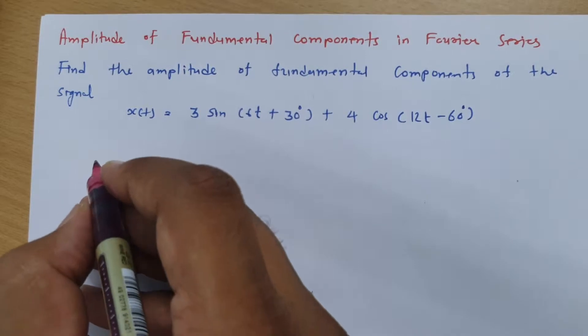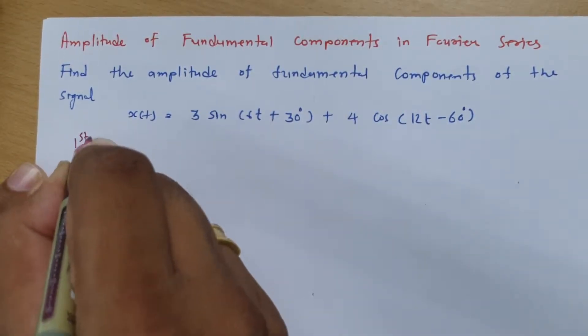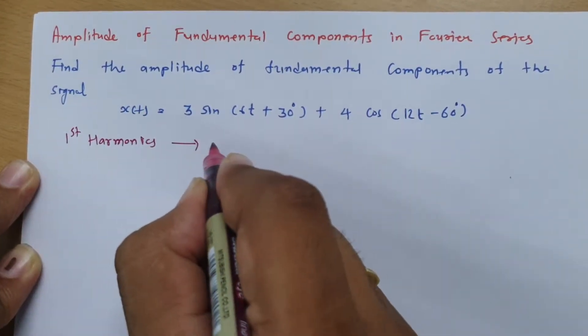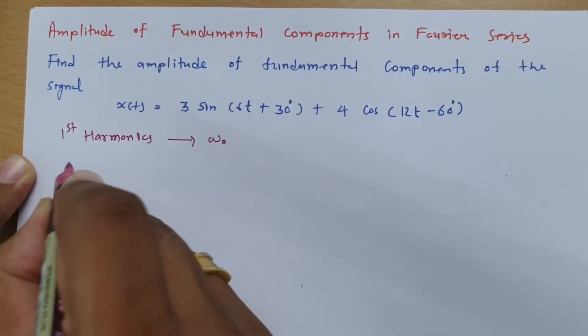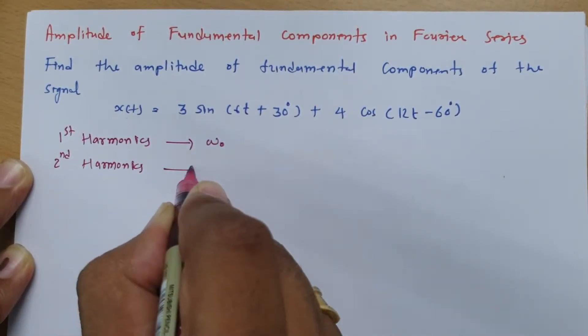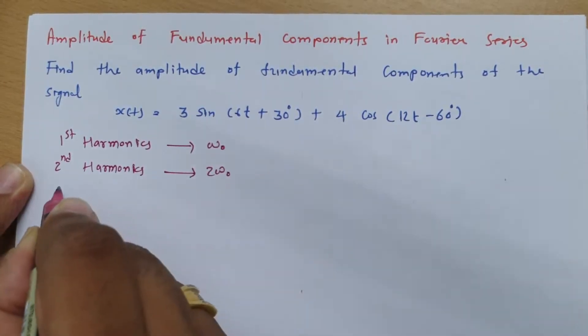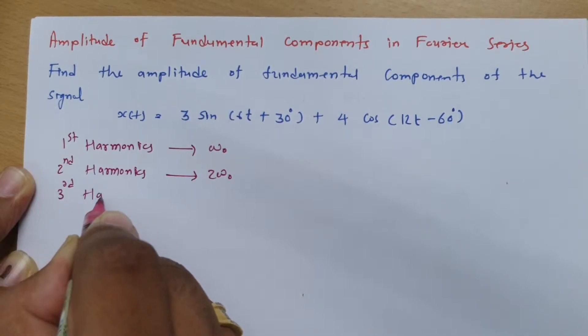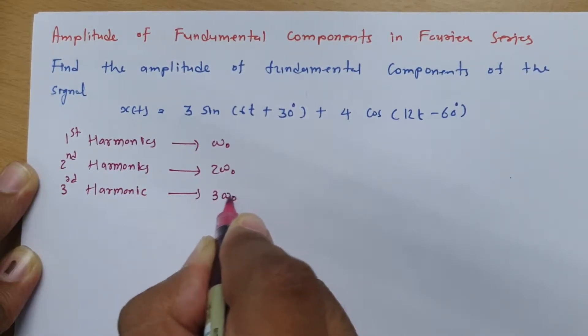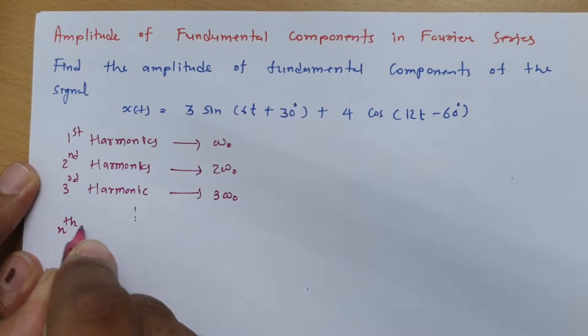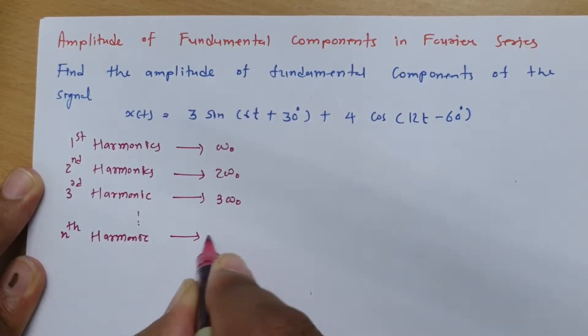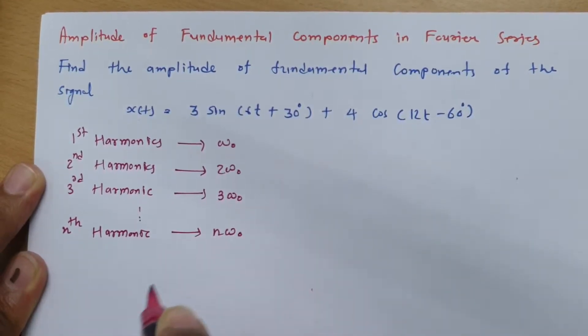See first of all what is first harmonics. So first harmonics, that is having frequency omega_0. If we talk about second harmonic, in that case it is having frequency 2 omega_0. For third harmonic, frequency is 3 omega_0. So likewise for nth harmonic, you can say frequency is n times omega_0.